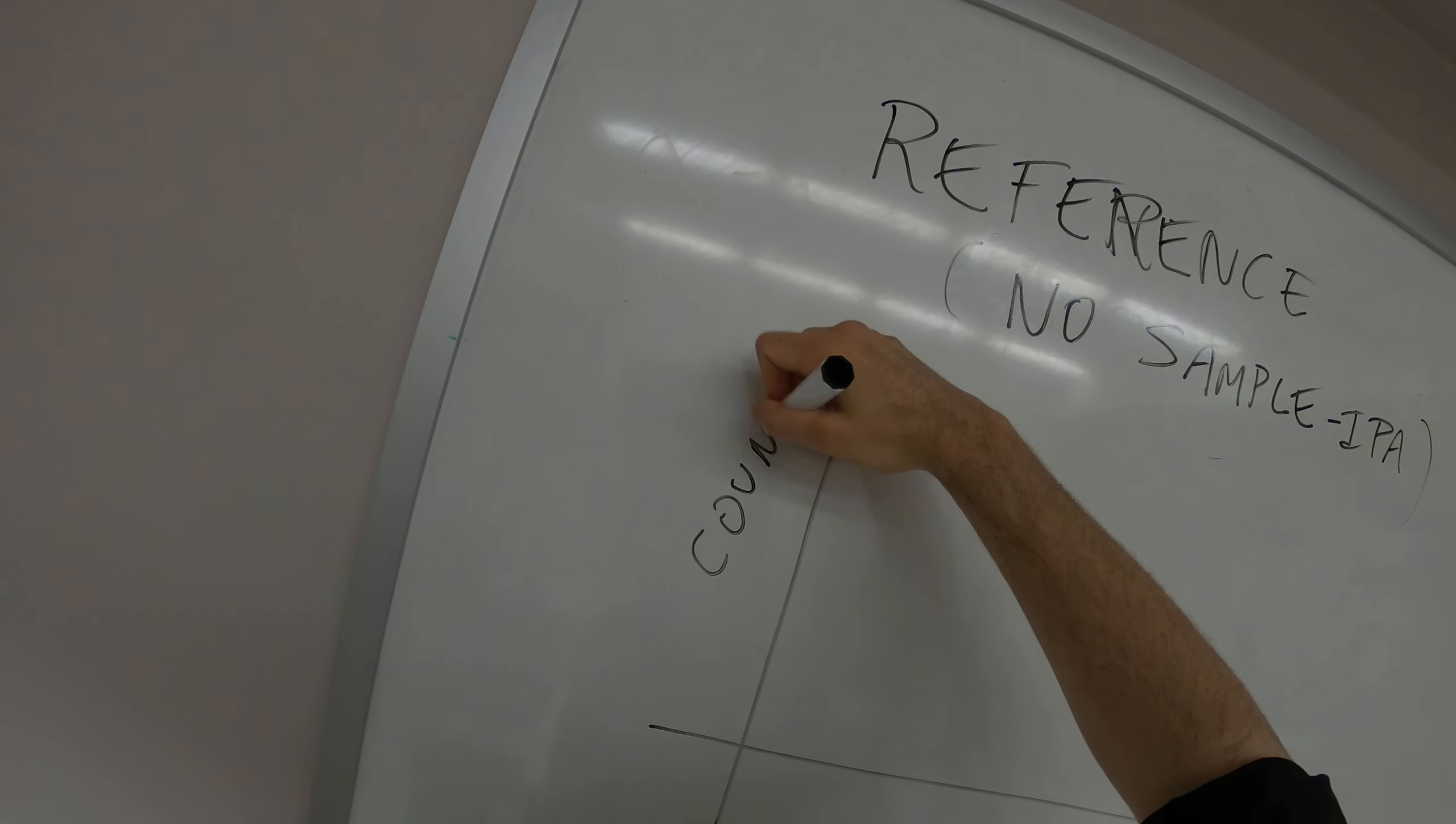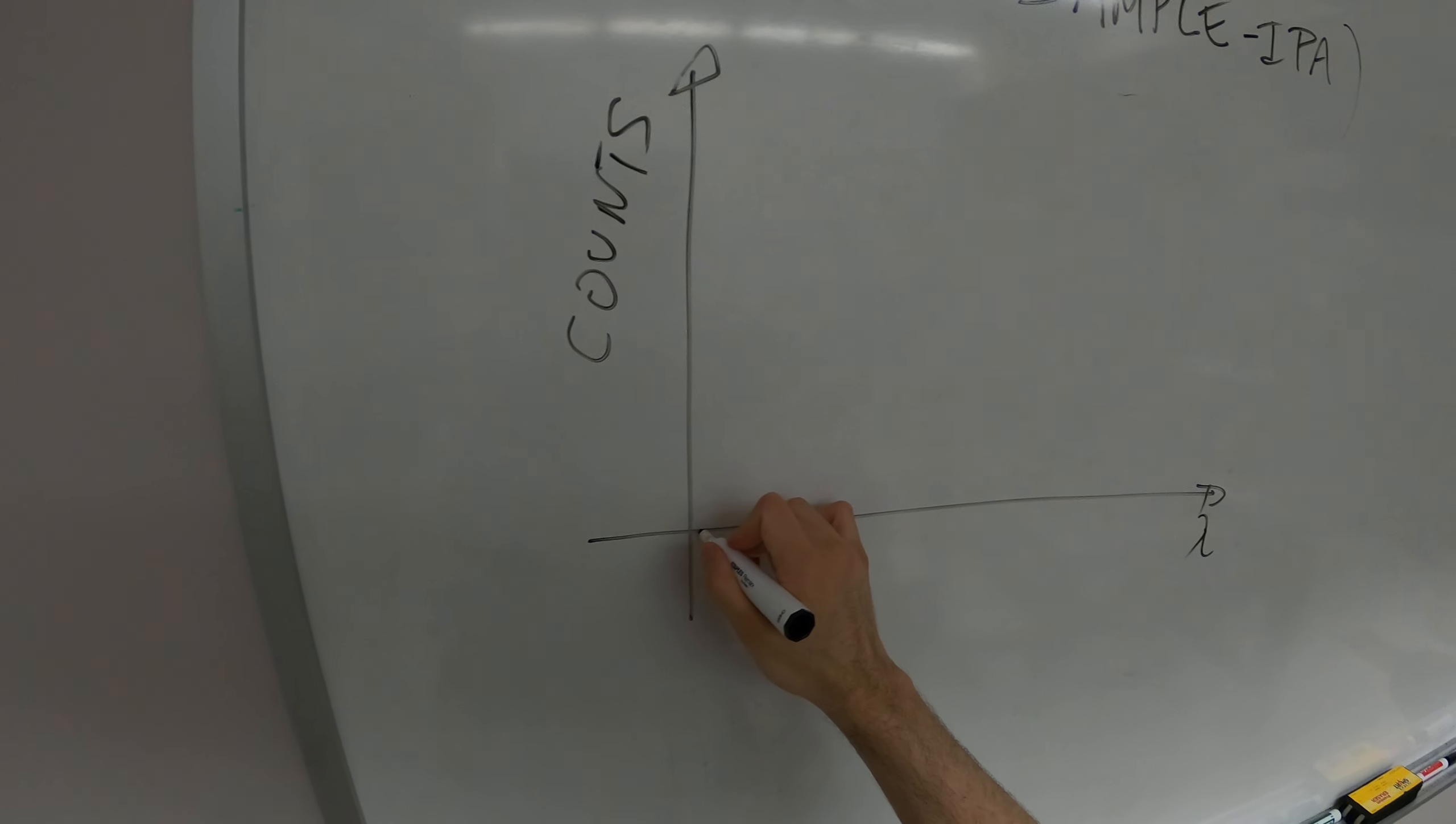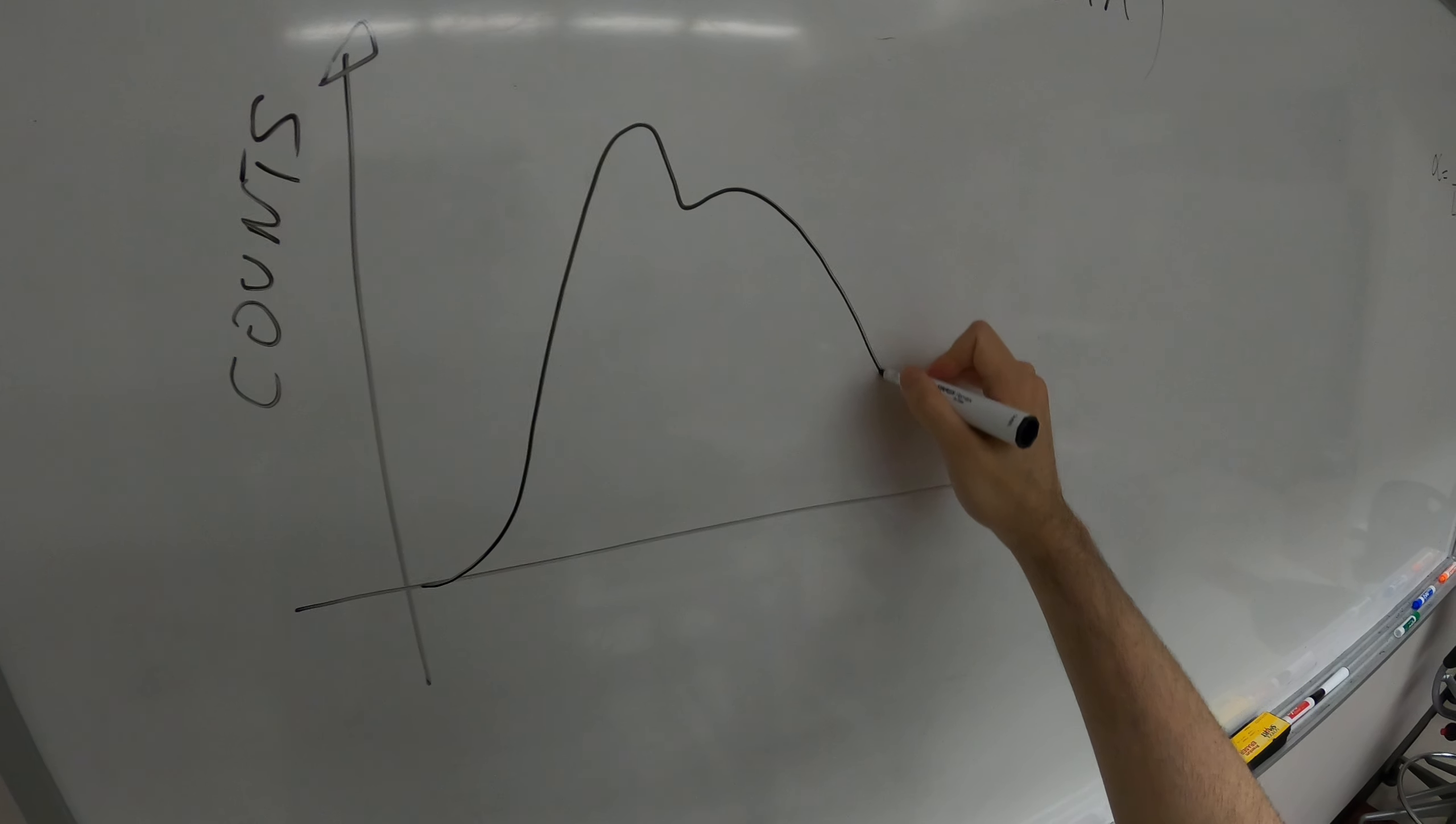Here is the number of counts, on the x-axis is lambda, and you get a spectrum of the white light.